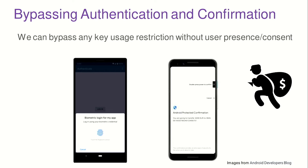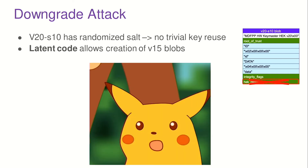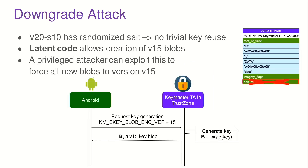This attack works specifically on S9. We then looked at newer devices to see if they're more secure. Because of the randomized salt, there's no direct key reuse attack. However, we discovered latent code that is not used anywhere in production, which allows creating the older V1.5 blobs without the randomness field. As a privileged attacker, we can perform a downgrade attack — forcing all blobs to be downgraded to the older, vulnerable version.